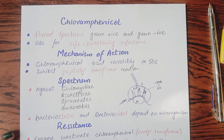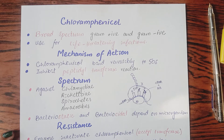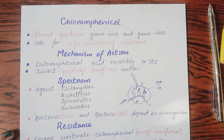Chloramphenicol is basically a broad spectrum antibiotic. It is effective against gram positive bacteria and also against gram negative bacteria. It is used for life-threatening infections. However, this drug causes severe toxicity — specifically bone marrow toxicity — which is its main adverse effect. Its use is restricted to only those life-threatening infections where no alternative exists.